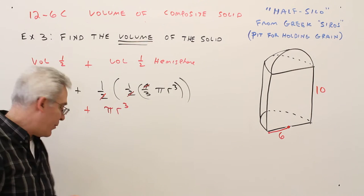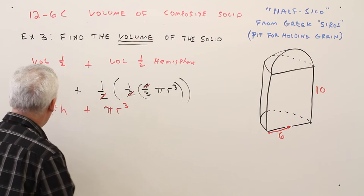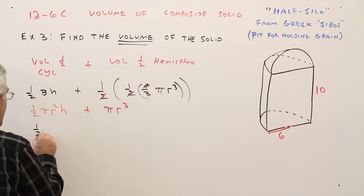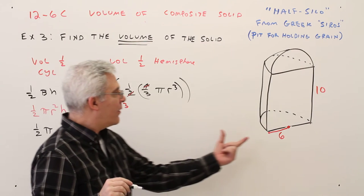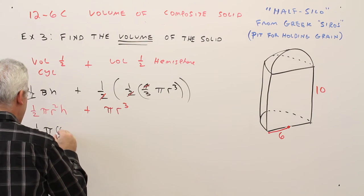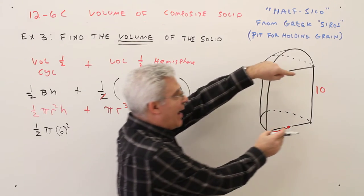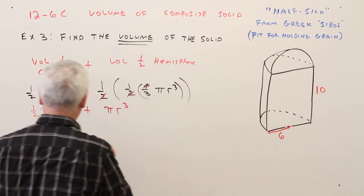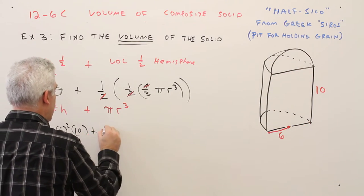Alright, let's put the numbers in now. So it'll be one half pi, the radius is six as shown, six squared. The height of the cylinder is ten plus pi.